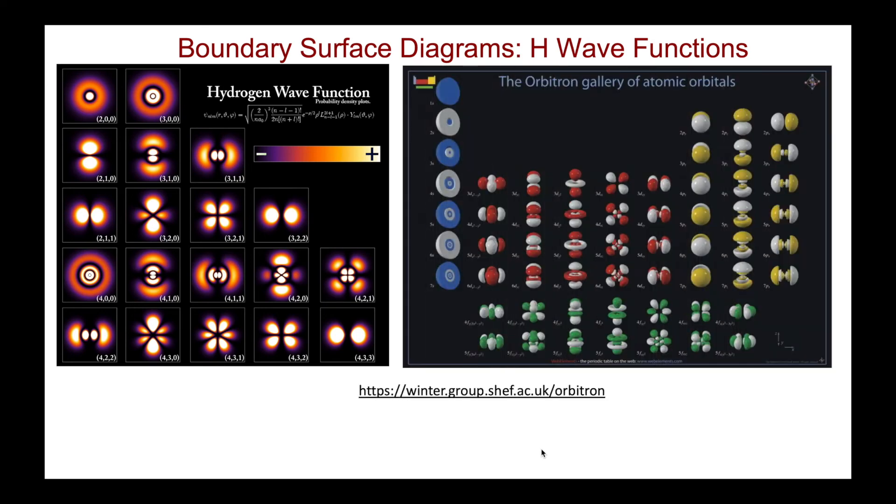Here's another image taken from the reference shown, the so-called orbitron gallery of atomic orbitals. More complicated drawings, but the shading reflects all of the key principles of the wave functions, their radial extent and the nodes that we have discussed before.